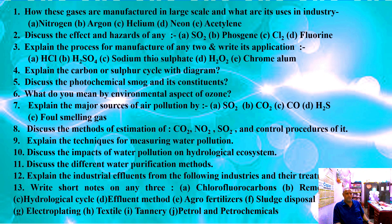Question number three — explain the process for manufacture of any of the following and write its application and chemical properties: A) HCl, B) H2SO4, C) sodium thiosulfate, D) hydrogen peroxide, and E) chrome alum.